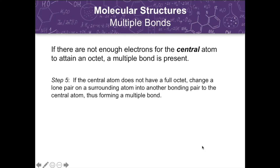There are some cases where there are not enough electrons for the central atom to attain an octet, meaning a multiple bond is present. In most of these cases, we have an additional step: if the central atom does not have a full octet, we change a lone pair on a surrounding atom into a bonding pair with the central atom, forming a double bond. This step can be done again if necessary to form a triple bond or another double bond.